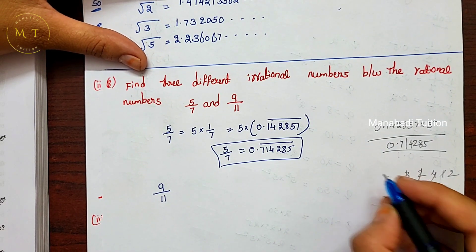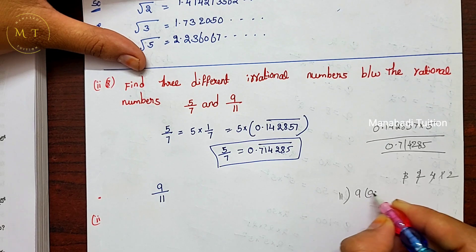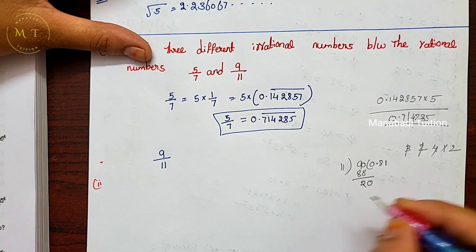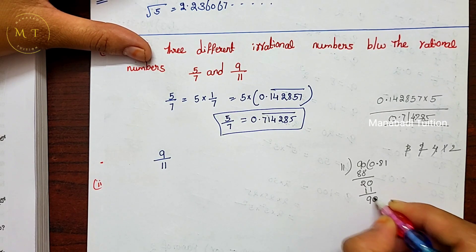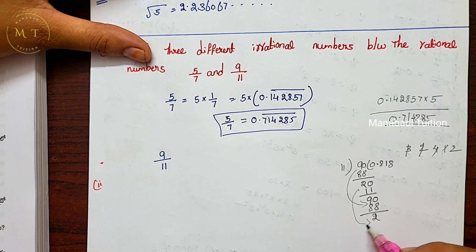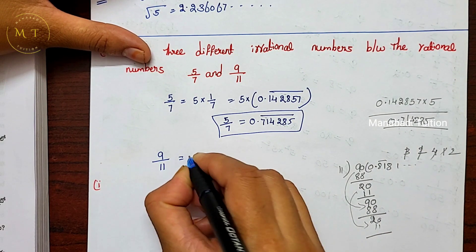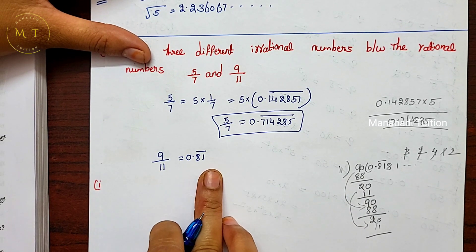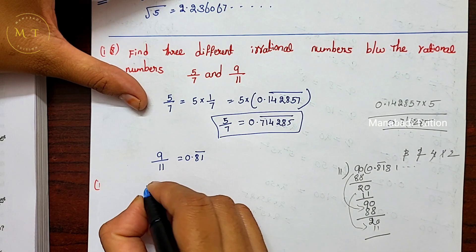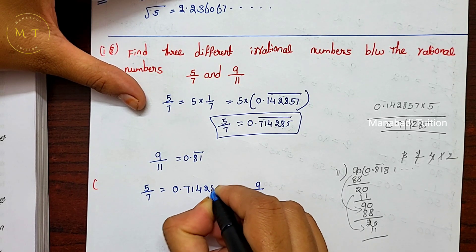Now convert 9 by 11 to decimal. Dividing 9 by 11: we get 0.8 then remainder 2, next step gives 1, then repeats — so 9 by 11 = 0.81 bar. So we need irrational numbers between 0.714285... and 0.81 bar.